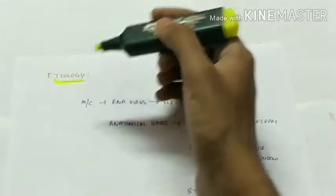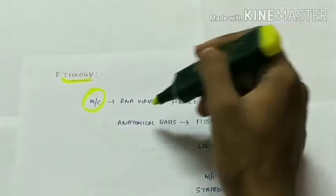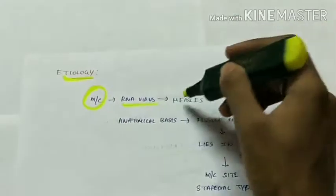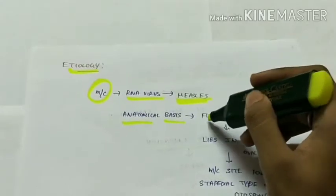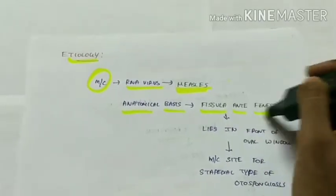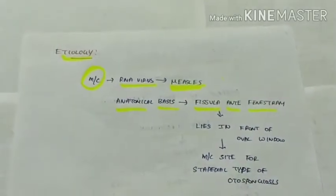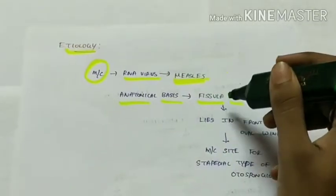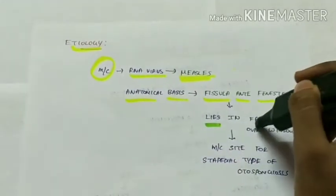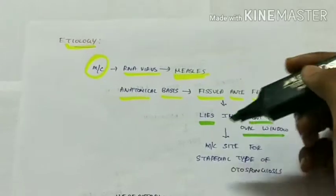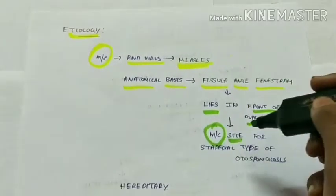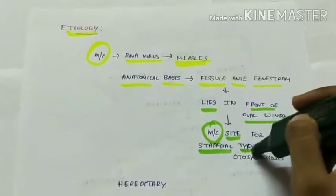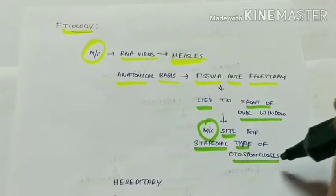The etiology of otosclerosis: most commonly it is caused by an RNA virus, which is the measles virus. On an anatomical basis, the most common site is the fissula ante-fenestrum, which is a part of the middle ear lying in front of the oval window on the medial wall of the middle ear. This is the most common site for the stapedial type of otospongiosis.